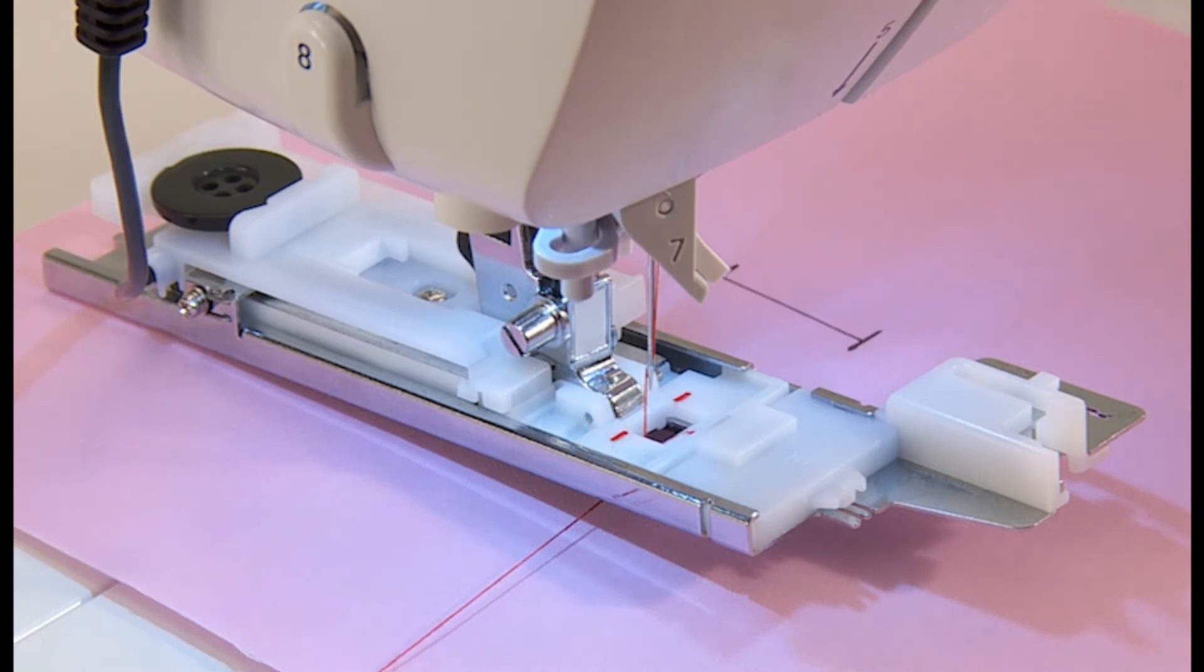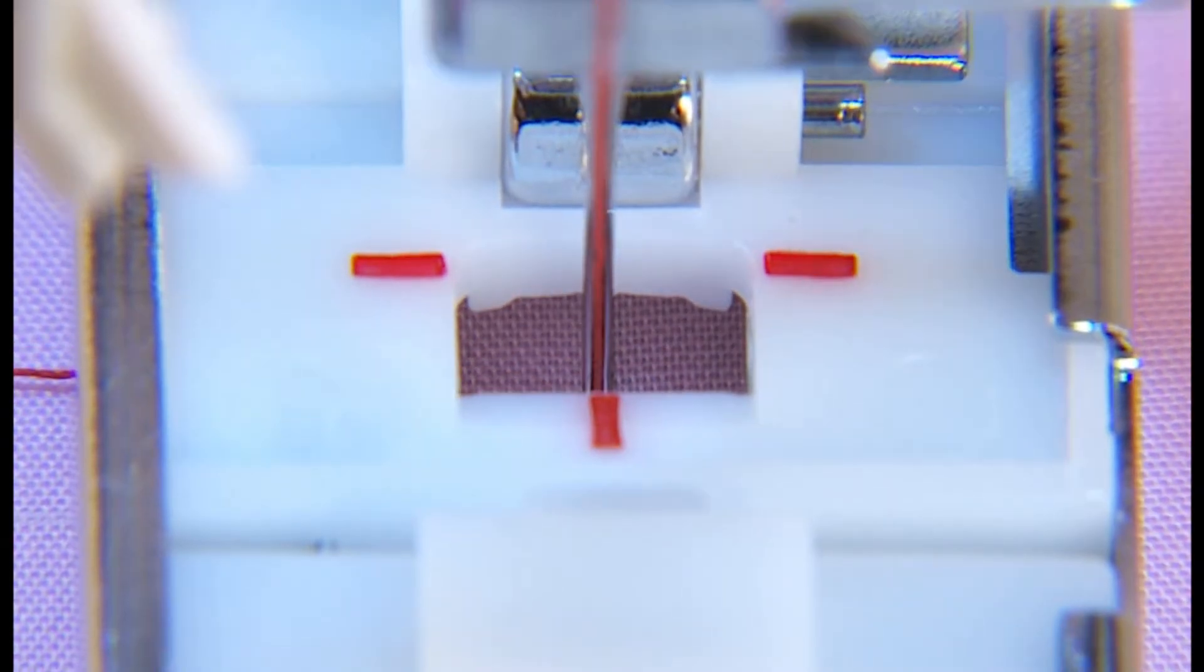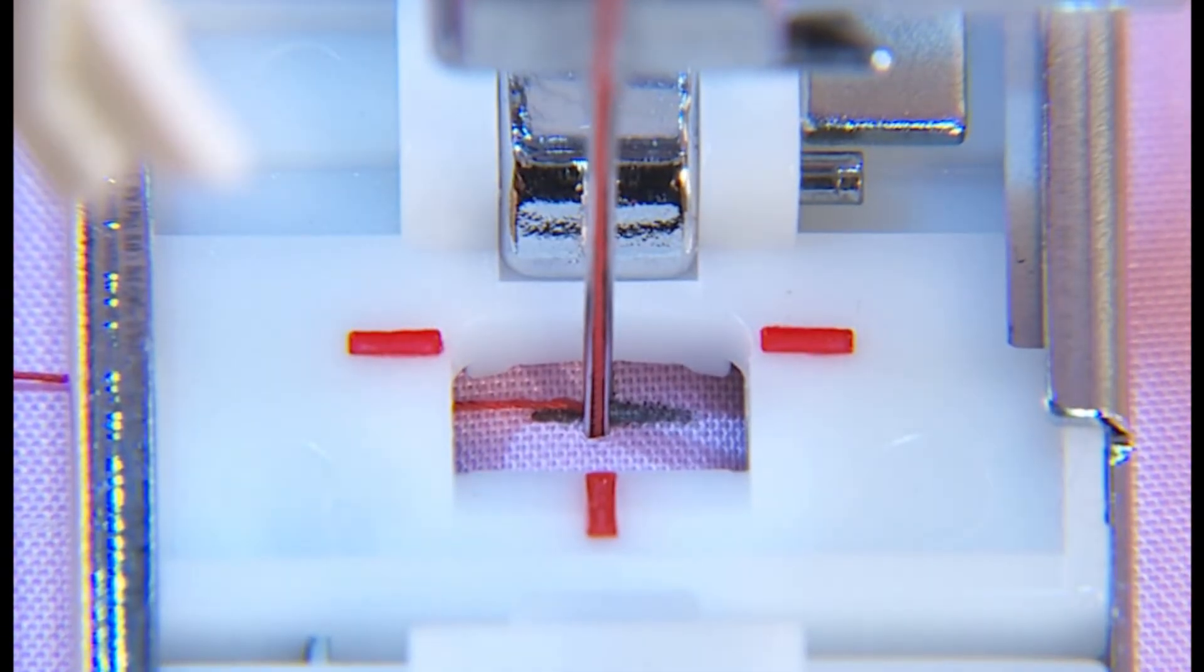Place the fabric under the presser foot. Align the marking with the sewing start point. Penetrate the needle into the fabric by turning the hand wheel and lower the presser foot.